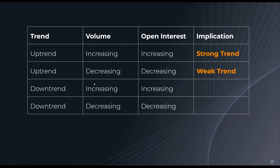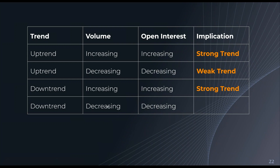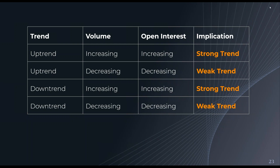Similarly, if we are in a downtrend and both volume and open interest are increasing, then the number of market participants are also increasing and trading activity is confirming the downtrend — this is a strong downtrend. In the last example, we are in a downtrend but volume and open interest are both decreasing. Participants are leaving the market, which does not strongly confirm the downtrend, so we have a weak downtrend and we expect it to reverse quickly or not last very long.